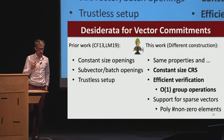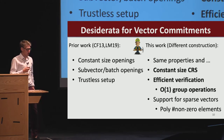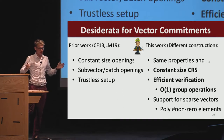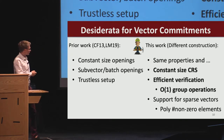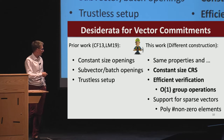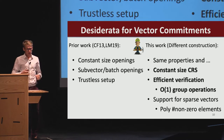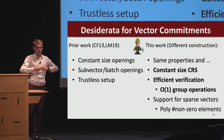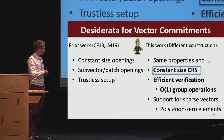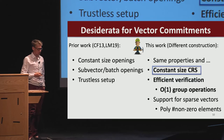For vector commitments, the desiderata look similar, and we already saw a beautiful construction for batch openings. The problem with that construction for this particular application is that the common reference string is as long as the vector that I'm trying to commit to. So I'm not really able to save space if I have to store this gigantic common reference string. Our work gives a different construction that maintains the same properties but also achieves a constant size reference string, efficient verification, and support for sparse vectors—vectors of potentially exponential size with only a polynomial number of non-zero elements.